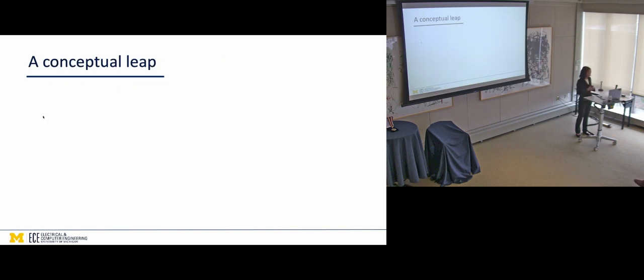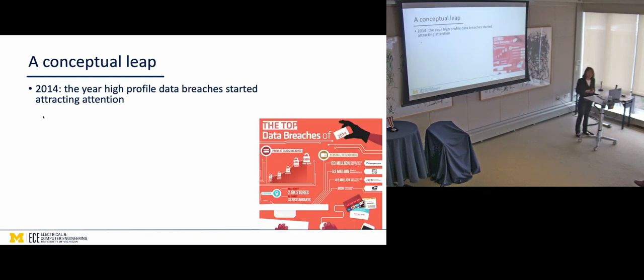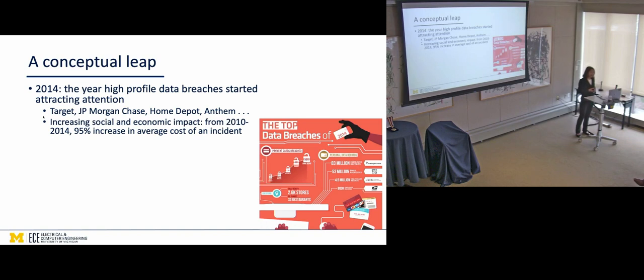Then came a conceptual leap. So this, we started doing this exercise around 2012. 2014 came. And that was perhaps the year where high-profile data breaches became very visible, okay? That was the year, I don't know, this is close to 10 years ago. And since then, we have had many more bigger data breaches. But that was the year where Target breach happened, followed by JPMorgan Chase breach, followed by Home Depot, Anthem. So I think this was a turning point. It was very clear that the impact, the social and economic impact of these data breaches were increasing very rapidly. Over a four-year span, the increase was 95%. More relevant to our study was this coincided with this onset of data recording. So these data breaches began to be reported more widely and more consistently.